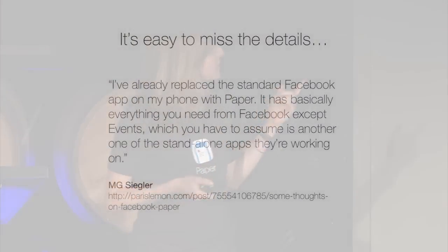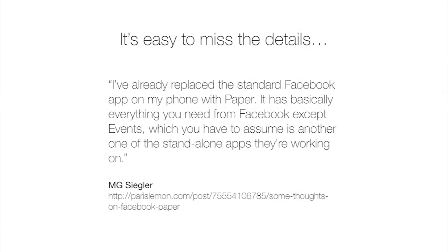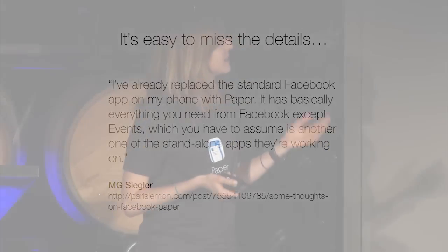For example, M.G. Siegler — another relatively tech-savvy person — has been talking about how events aren't in the Paper app. They are in the Paper app, they're just maybe not as easy to find. You can get to them through notifications if there are stories about the event in your news feed, or you can search for events by name. But even M.G. Siegler can't find them. I used to work on the events team, so this is something that personally concerns me.